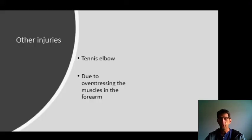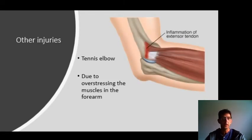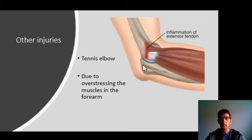A tennis elbow is caused by overstressing muscles in the forearm through the same repetitive movement over and over again. The tendons that attach the muscles in the forearm to your upper arm get an inflammation there — that is painful because it's overused. The golfer's elbow is similar but on the inside of the elbow.